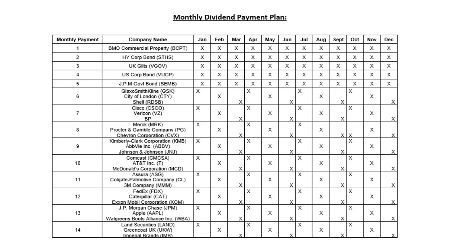I've set up this monthly dividend payment plan to show you how to get your 14 payments a month on Freetrade. For monthly payment one you need to buy BMO Commercial Property. Payment two is HY Corporate Bond. Payment three is UK Gilts. Payment four is US Corporate Bond. Payment five is JPM Government Bond.